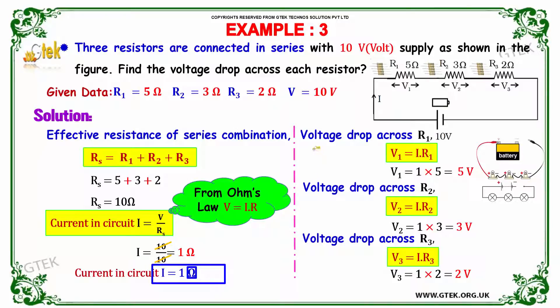So voltage drop across R1 is given by V1 equal to I into R1. So I is 1 into R1 is 5. We got the voltage drop across R1 is 5 volt.